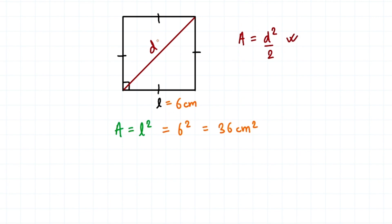For example, if the diagonal of the square is 4 centimeters, then the area is 4 squared divided by 2, which is 16 divided by 2, equal to 8 centimeters squared. So we have two formulas to find the area of a square.